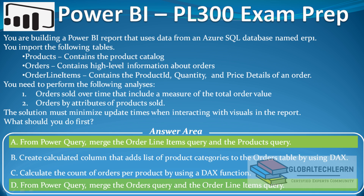So with all data from a single table, interaction will be fast. Going back to the question, under transformation we performed two steps: Option A — merging Order Line Items with the Products table, and Option D — merging the Orders query with the Order Line Items query in Power Query Editor. The correct answers are Option A and D. However, since the question does not specify choosing two options, if only one answer is required, you should select Option D.